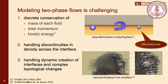Modeling two-phase flows is challenging. Challenges include discrete conservation of mass, total momentum, and kinetic energy — particularly important for accurate modeling of turbulent flows. For example, in a simple drop deforming in a shearing flow, the drop can lose almost 80% of its mass, which is not acceptable. Other challenges include handling density discontinuities across the interface, dynamic creation of interfaces, and complex topological changes, as seen in atomization of a liquid jet in air crossflow generating thousands of droplets.